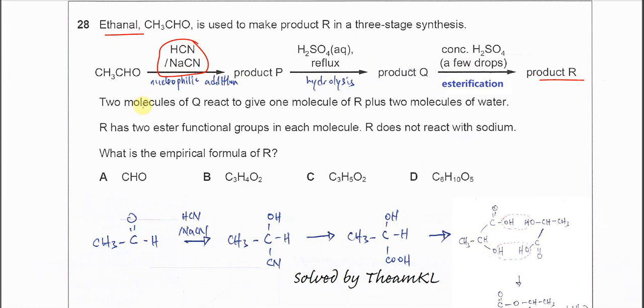The ethanal will form the cyanohydrin. It adds the HCN, the H and the CN, to form this cyanohydrin.